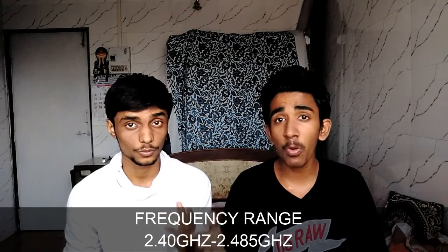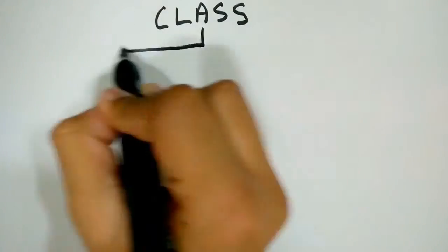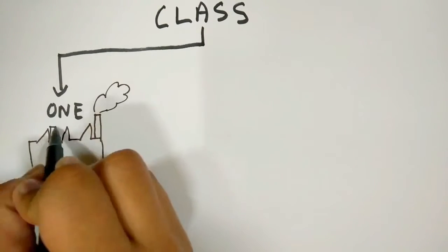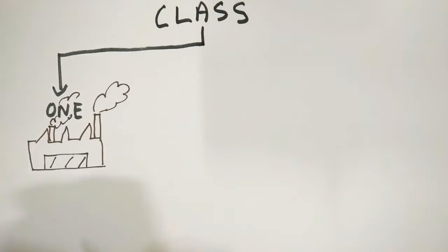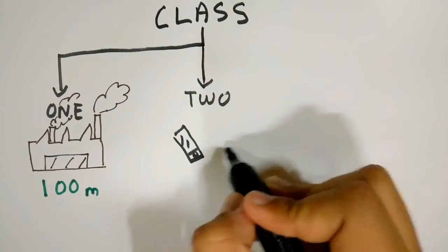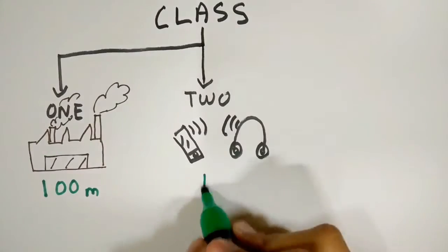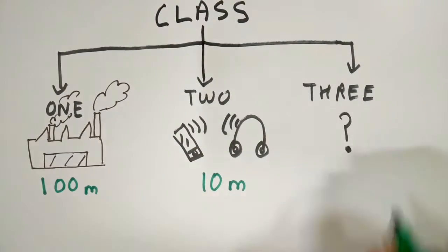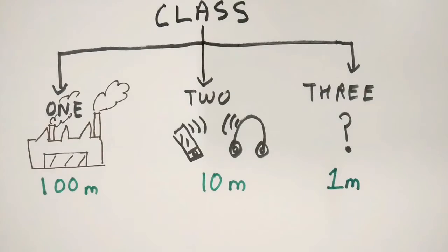To transfer this data, Bluetooth uses very low power radio waves whose frequency range is from 2.40 GHz to 2.485 GHz. There are 3 different classes of Bluetooth devices. Class 1 is for industrial applications where the range is about 100 meters. Class 2 devices feature mobile phones and Bluetooth headsets where the range is about 10 meters. Class 3 devices are very rarely used because the range is just about 1 meter.